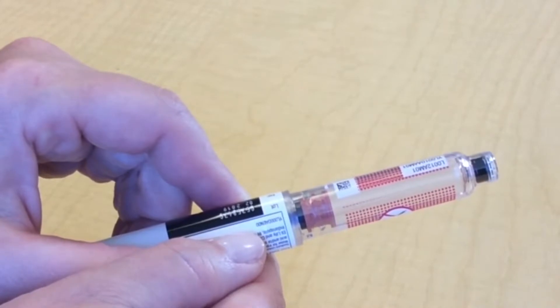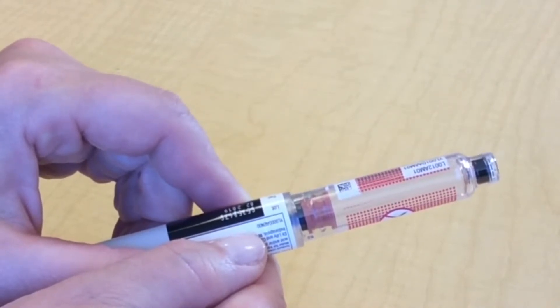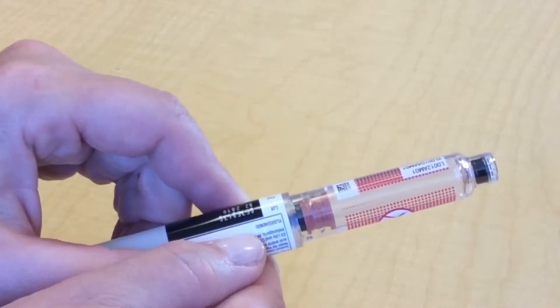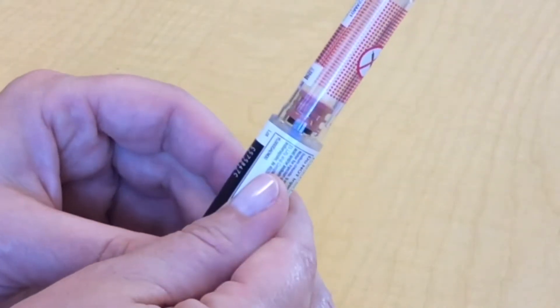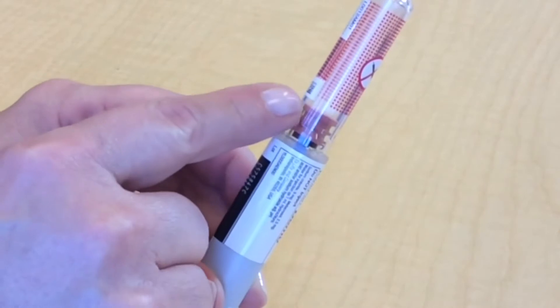Depending on which type of insulin you are prescribed, your insulin should either be clear or cloudy. If your insulin is clear, look for changes in color or for anything solid floating in the insulin.